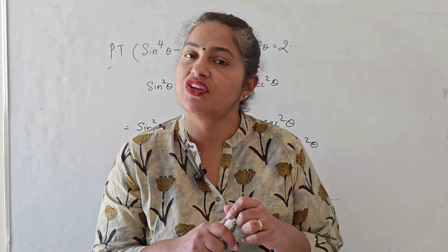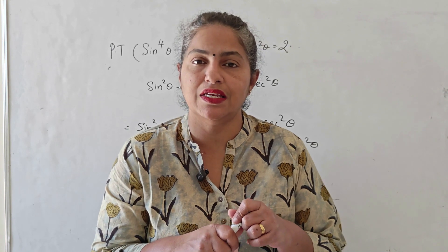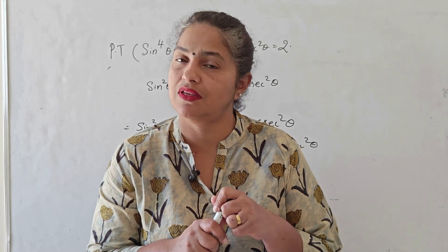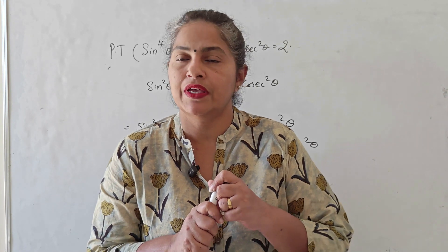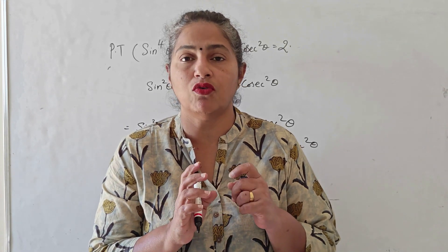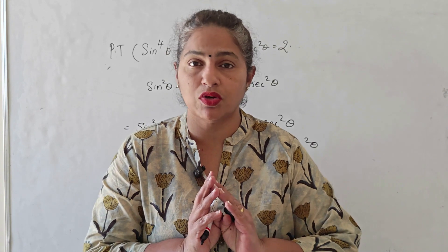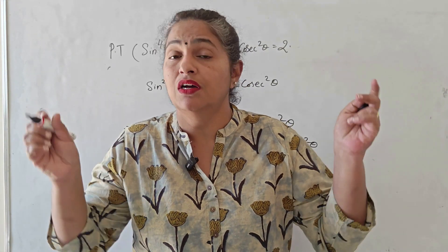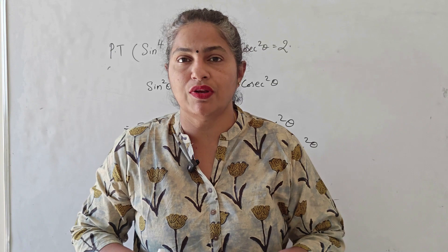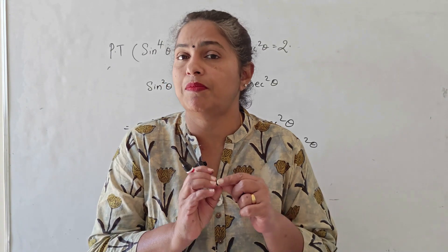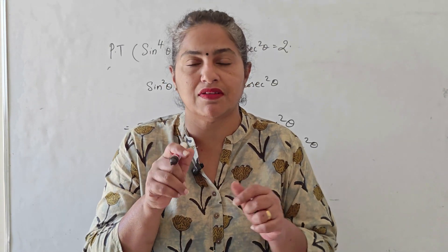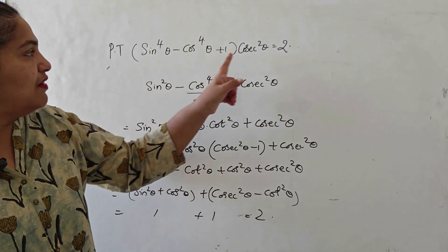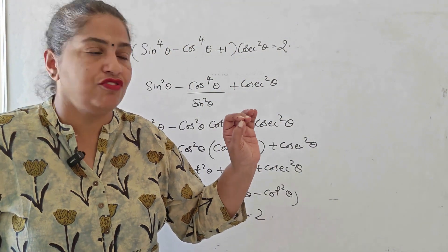Can we do this sum without using the identity? We can. Moving on to the third method — if all this sounds confusing, you don't have to bother about multiple methods; choose the method you are comfortable with. For students not comfortable applying the a⁴ − b⁴ identity, you can follow this method where I have simply opened the bracket in the LHS directly.